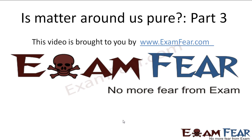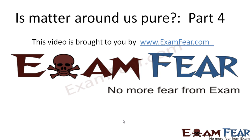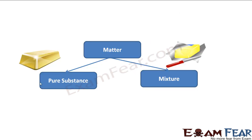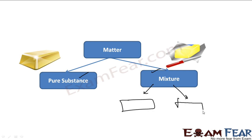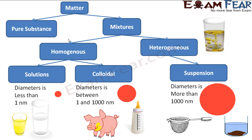This video on 'Is Matter Around Us?' Part 3 is brought to you by exampa.com. So far, we have seen that matter can be classified into pure substance and mixture, and that mixtures can be further classified into homogeneous and heterogeneous. Now let's do a further classification.